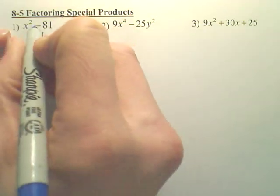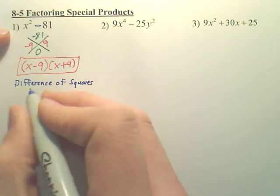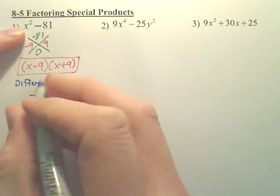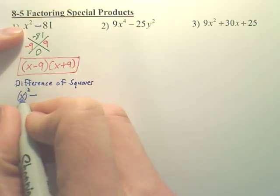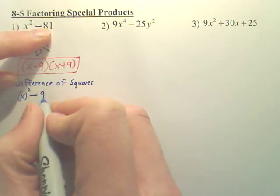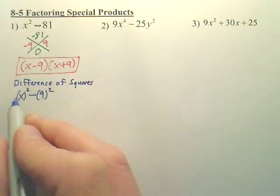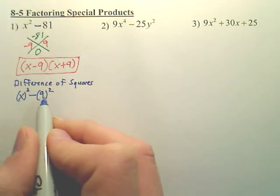Why is it called a difference of squares? That right there is a difference. This right here is x squared. That's a square value. 81 is 9 squared. See how that's a difference or a subtraction of two squares?